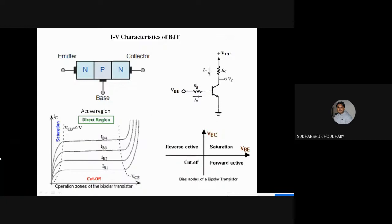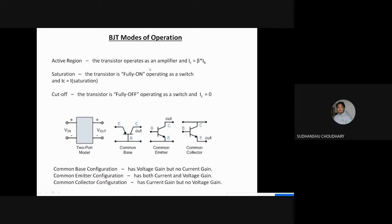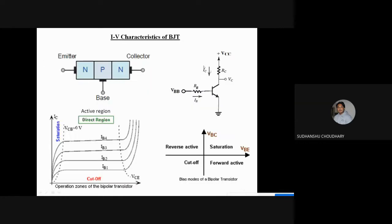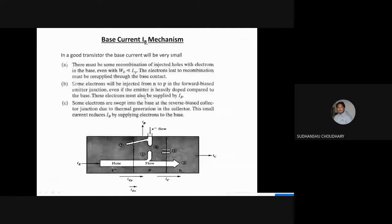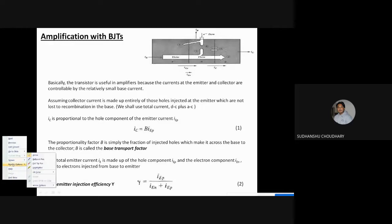The active region in the middle can be utilized for amplification because here the base current can be amplified, so that IC is beta times IB. One can think of amplifying the collector current by applying a small base current. Depending upon beta of the transistor, the collector current can be modified. Today let us talk about amplification in BJTs.